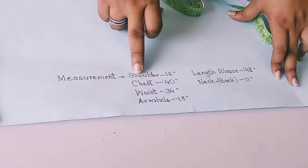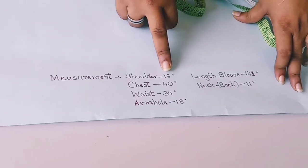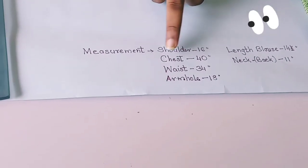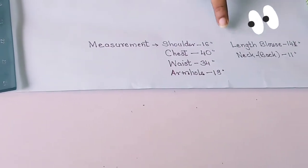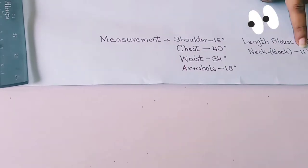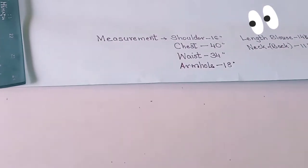For making armhole we are following this measurement: shoulder 16 inch, chest 40 inch, waist 34 inch, armhole 18 inch, blouse length 14 and a half, and neck back 11 inch. So let's start.